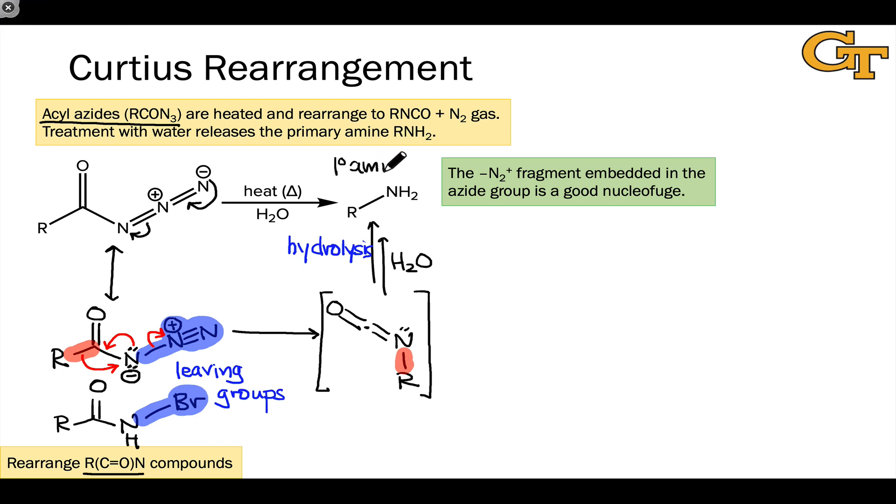Just like the Hoffmann rearrangement, the Curtius rearrangement can be used to synthesize primary amines. The nice thing about this is it takes a little bit fewer reagents. If you can set up the acyl azide, all you have to do is heat it, and it will rearrange spontaneously to this, and then treatment with water will give the primary amine quite straightforwardly. We can avoid the use of base and elemental halogen, which are not the friendliest conditions in the world.